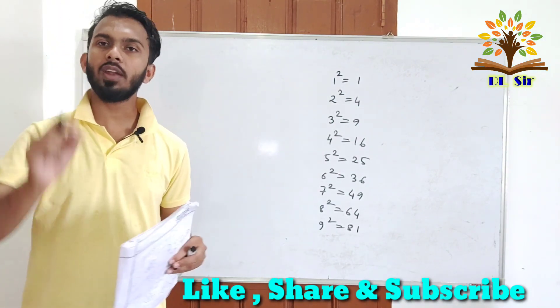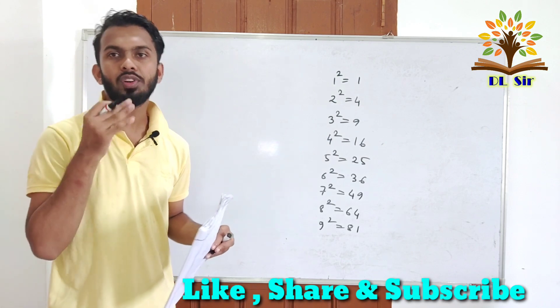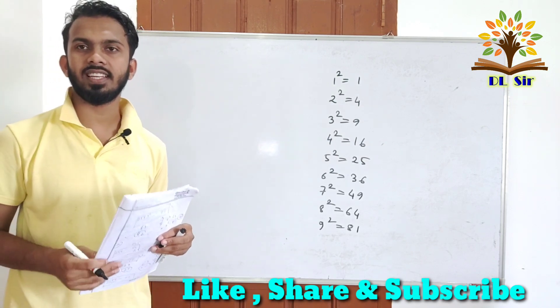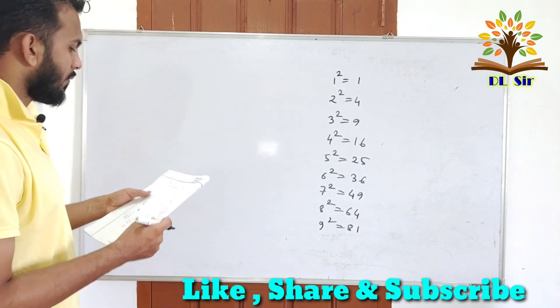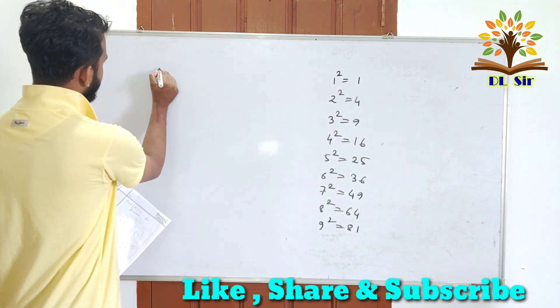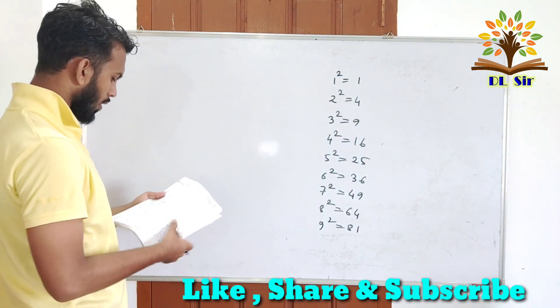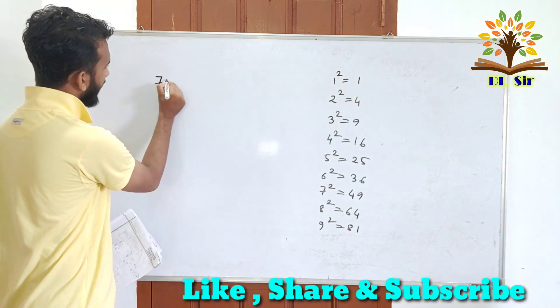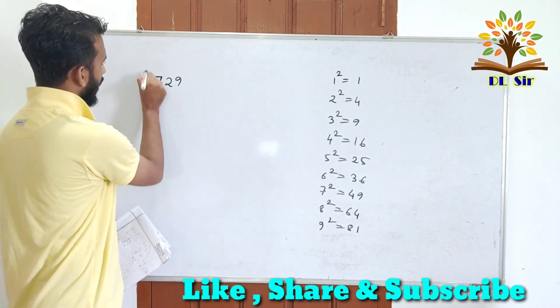Let's go to the square root of the exam. So let's go to the shortcut trick. So the first number is 729. This is the square root.